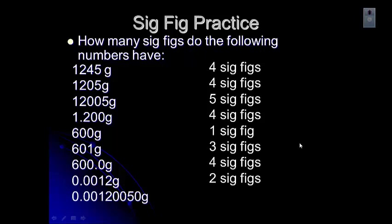Try this last one — now I'm just messing with you. This one has six sig figs. The 1 and 2 are significant, the 5 is significant, and that makes the two zeros after it significant as well. Then there's a final zero which is after a non-zero digit and a decimal point. None of the leading zeros are significant — those are just placeholders.